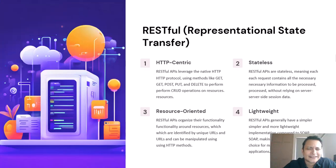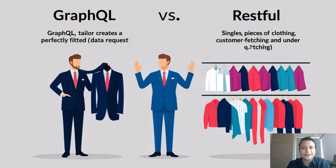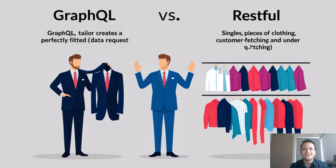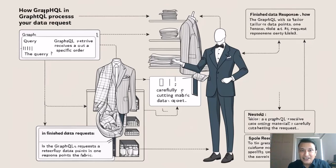Now let's meet GraphQL, the custom data tailor. GraphQL is like a tailor who asks you exactly what you need and then crafts a suit that perfectly fits your body. Unlike REST, which might give you more or less than what you asked for, GraphQL gives you exactly what you need — nothing more and nothing less. Need a specific data set? No problem, GraphQL will tailor the response precisely to your request, making sure you don't waste any time or resources.